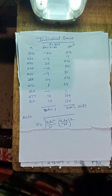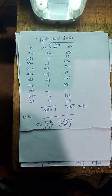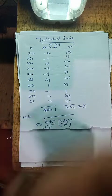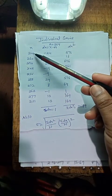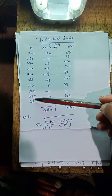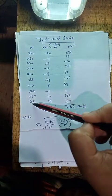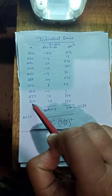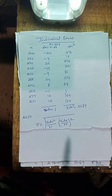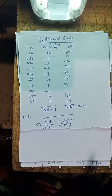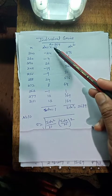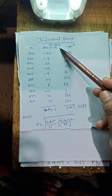सबसे पहले हम individual series की एक example देखेंगे। हमारे पास given data x की form में है: 1, 2, 3, 4, 5, 6, 7, 8, 9, 10 — ये 10 numbers हैं जो हमें दिये हुए हैं। इनकी help से हमें standard deviation निकालना है। सबसे पहले हम dx calculate करते हैं। dx means x minus a.